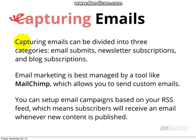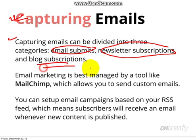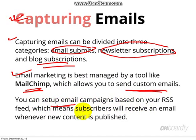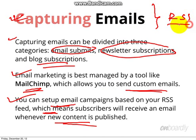Capturing emails can be divided into three categories: email submits, newspaper subscriptions, and blog subscriptions. Email marketing tools like MailChimp allow you to send custom emails and set up an email campaign based on an RSS feed, which means subscribers will receive a mail whenever new content is published.